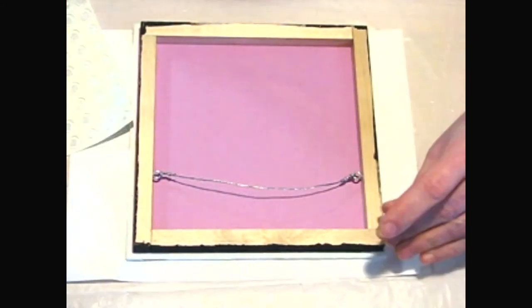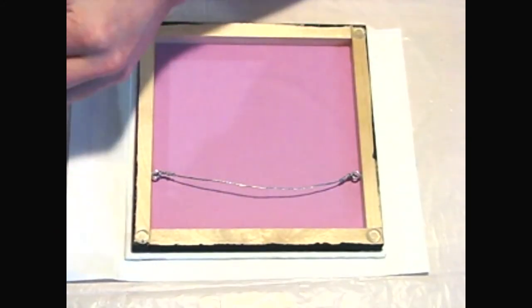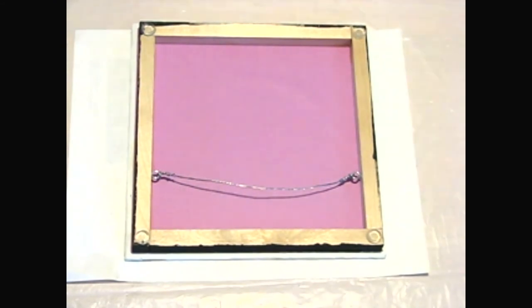The last step is to add four silicone bumpers. These help keep the frame off the wall and allow air flow behind the painting which minimizes any moisture buildup that might occur.